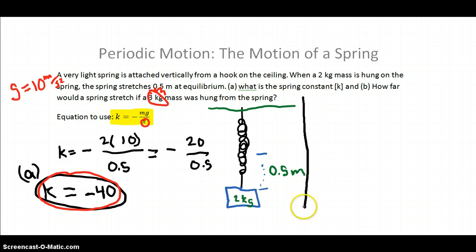I'll try to box this off a little bit. The second part of the problem, part B, all we do is we input these values into our equation. Again, k is negative 40, is equal to negative the mass, which is 3 kilograms, so I'll put 3 times 10, again, normally gravity is 9.8, but I chose 10 for ease of calculation. Divided by x, and x is what we're solving for.